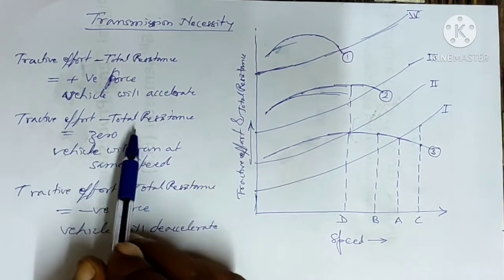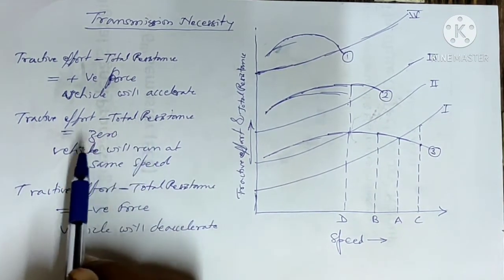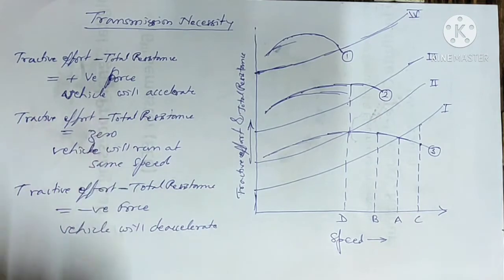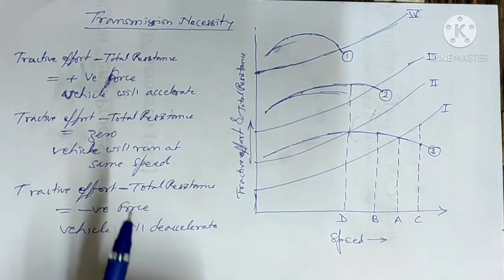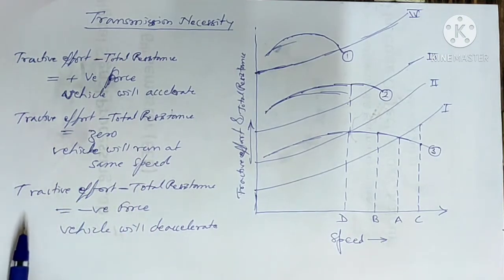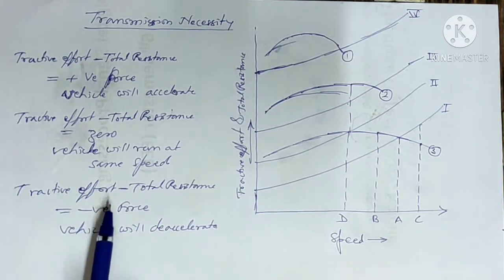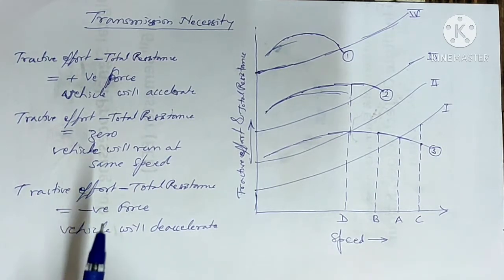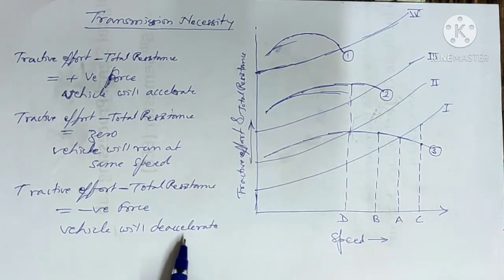In the second case, if the tractive effort minus total resistance is equal to zero, that means the tractive effort equals the total resistance, so there is no net force acting — the vehicle will run at the same speed. In the third case, when the tractive effort minus total resistance is negative, the total resistance is more than the force we are applying, so the net force will be negative and the vehicle will decelerate, as F equals M into A — F is negative, so A will be negative.